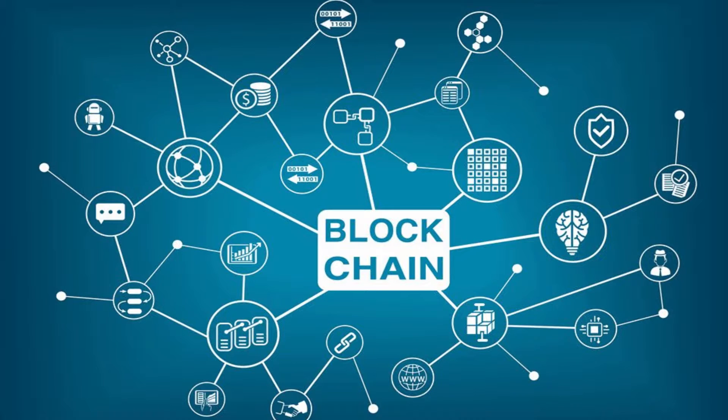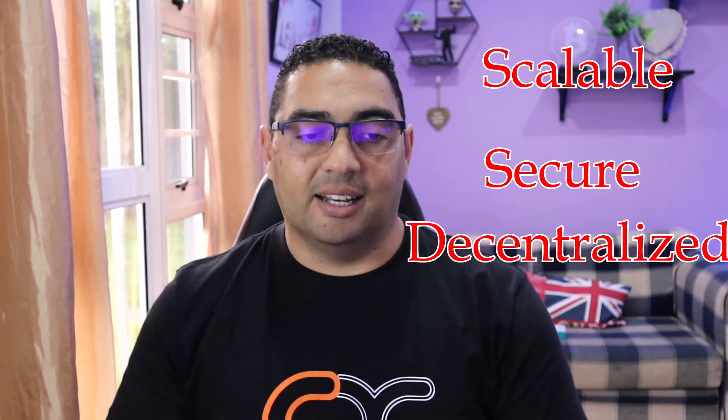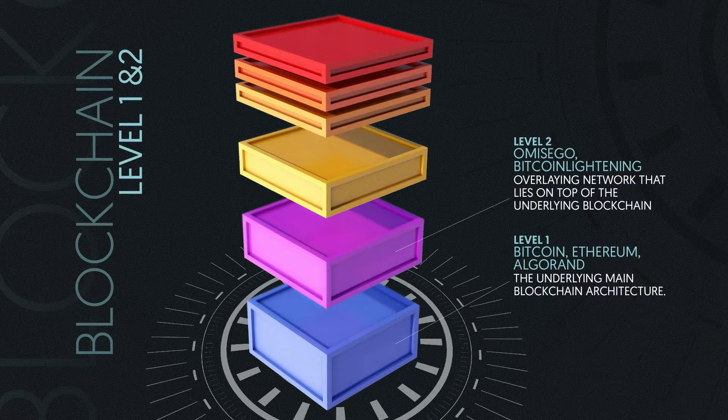A blockchain processes transactions — it allows funds to move from A to B, and these transactions are recorded. A blockchain should be three things: it should be scalable, it should be secure, and it should be decentralized. Blockchains like Bitcoin and Ethereum are often described as layer one blockchains or layer one chains.